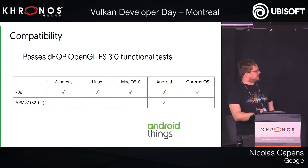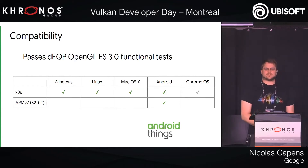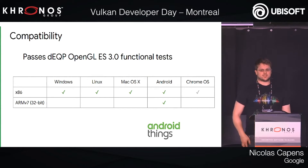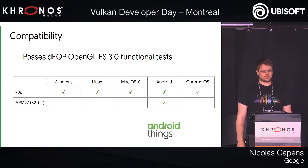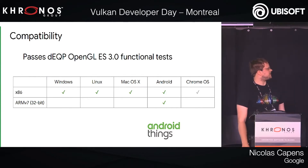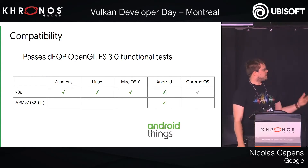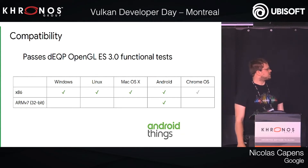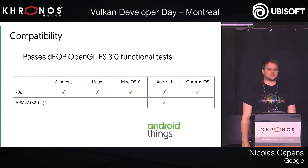So where do we stand today? We fully support OpenGL ES 3 for the dEQP test suite. We will be submitting it to the Khronos suite soon, so we get fully ratified. We support all the major platforms now. Chrome OS is coming soon, and we recently also added ARM support, so you can run it on actual Android devices.